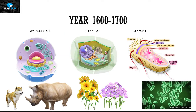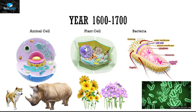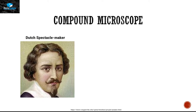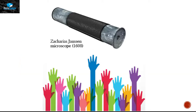The cell was discovered between the year 1600 to 1700. This story started with the discovery of the compound microscope by Dutch spectacle maker Zacharias Janssen in 1608. When the compound microscope was discovered, it was a hot item for every scientist because they wanted to see different types of things using this microscope.